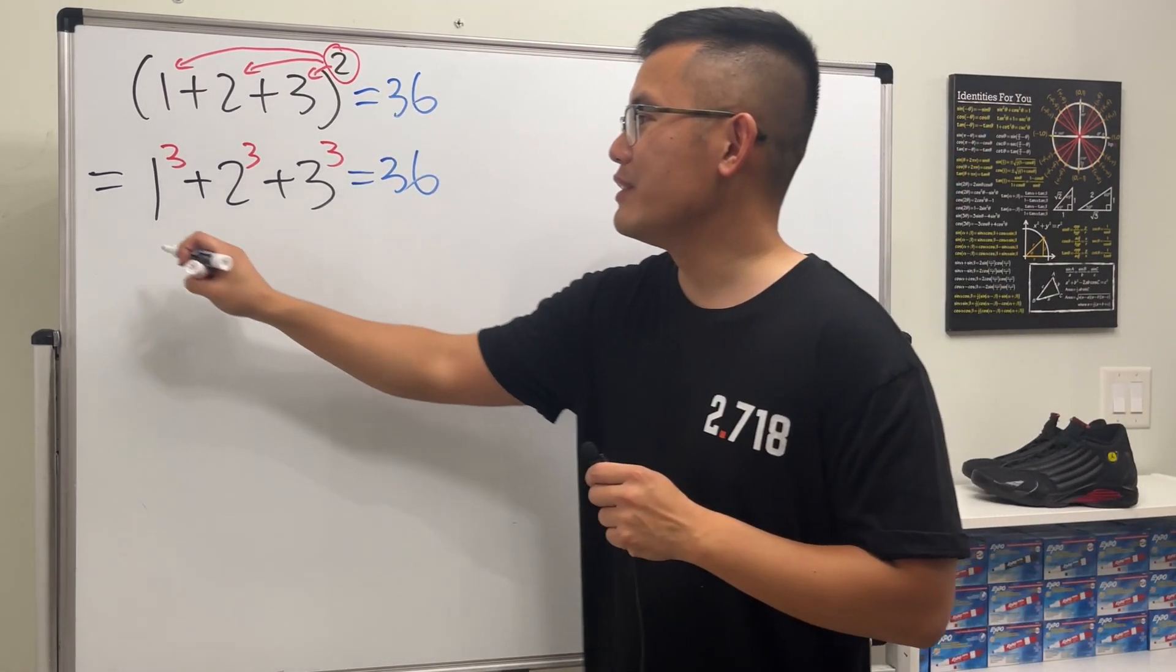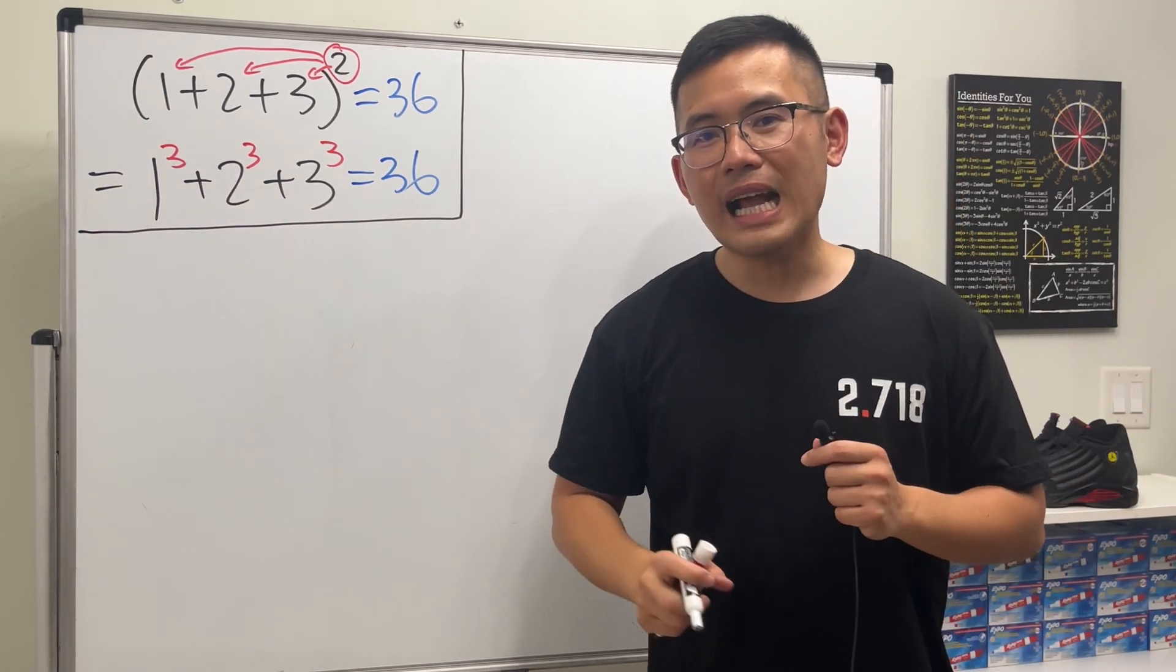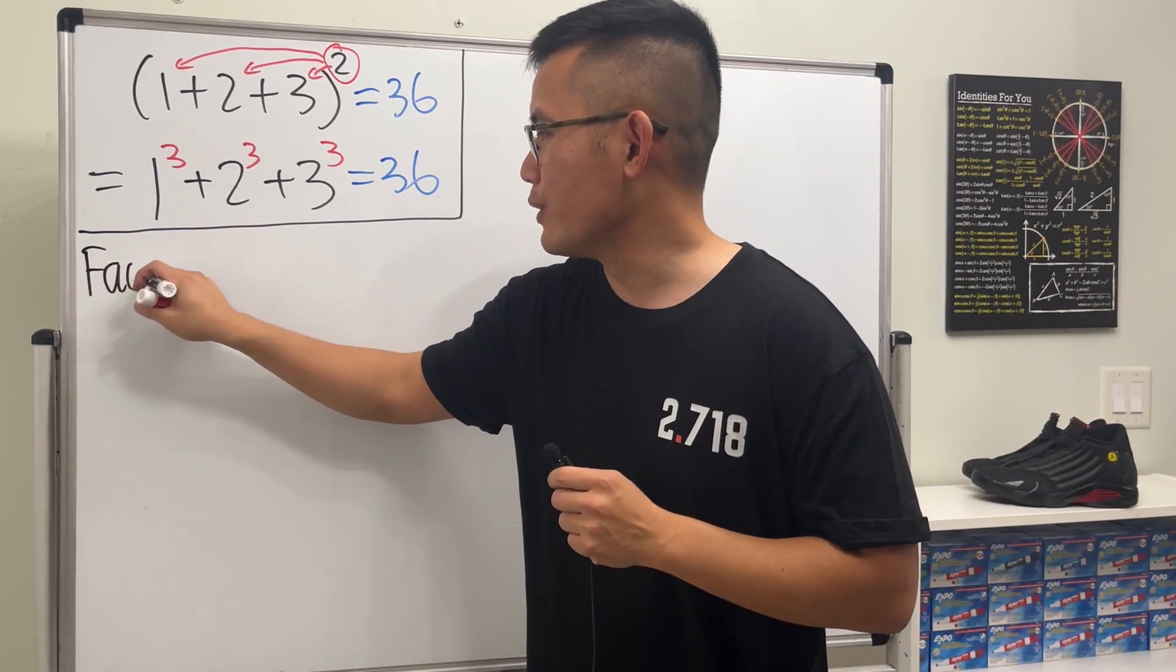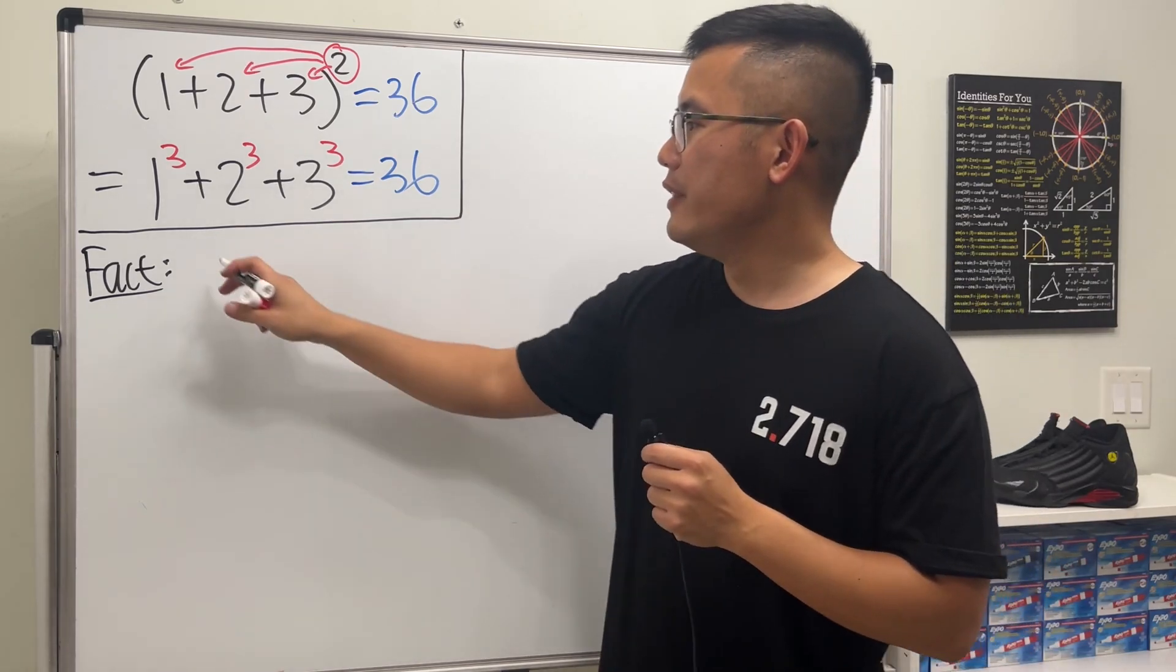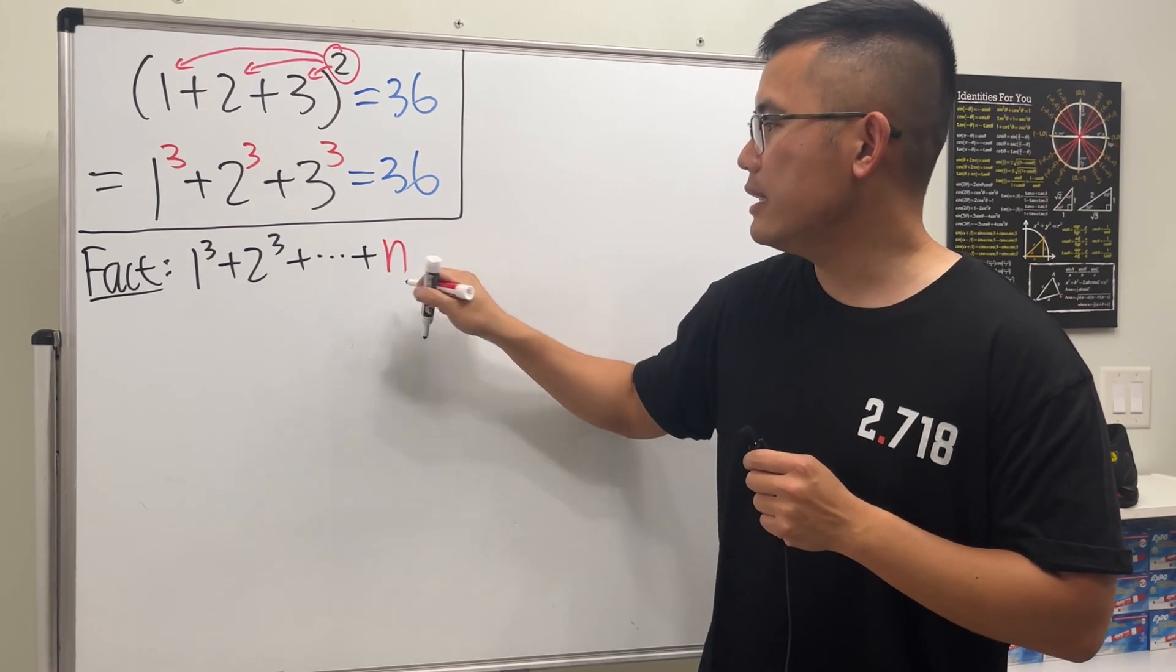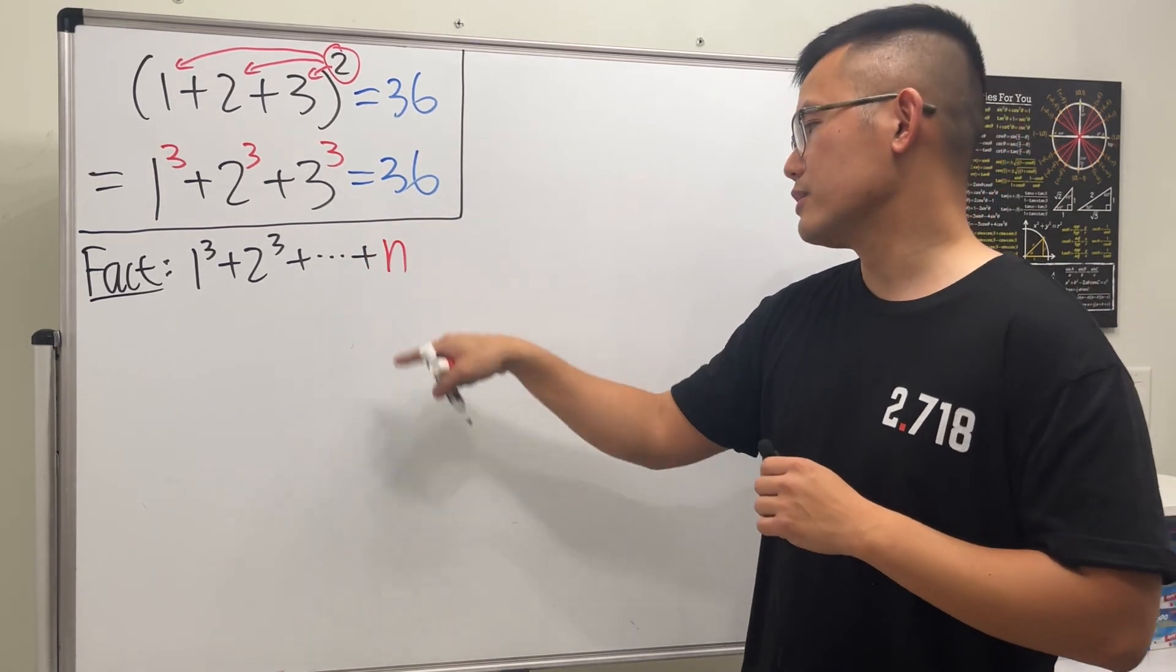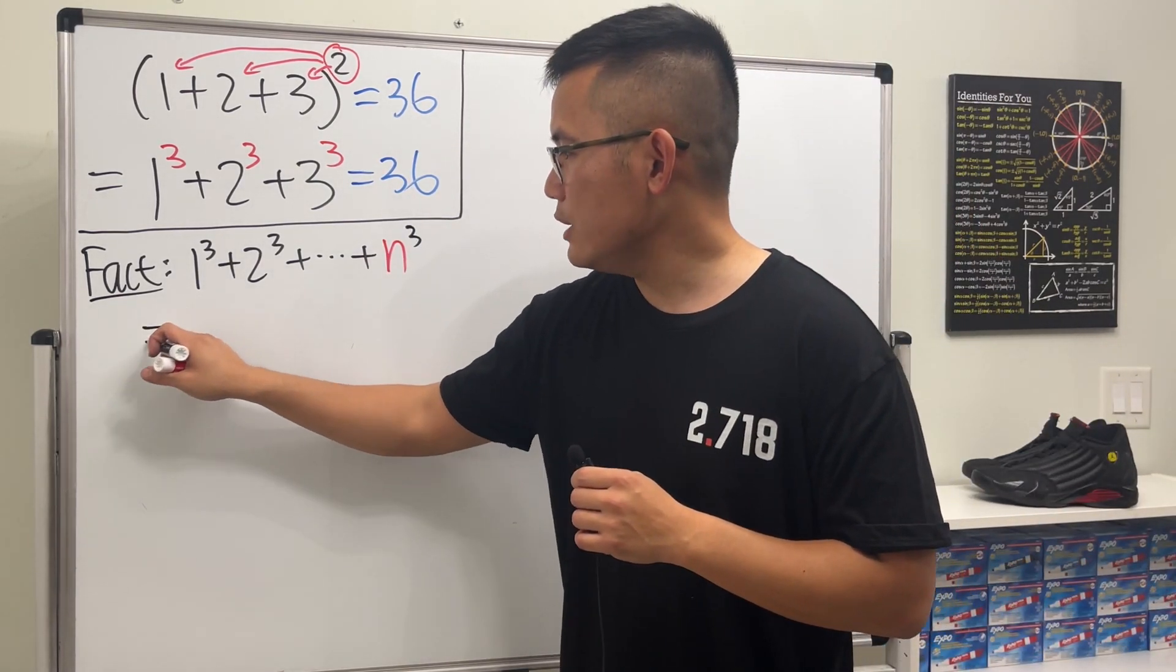So yeah, we do have the same answer. But why though? Why does this work? In fact, I'm using a very nice identity. Let me just put this down right here for you guys. It's the sum of the first n cubes: 1³ + 2³ + ... up to some number n (positive whole numbers, hopefully; if it's 0 then it's obvious). n³ like this.